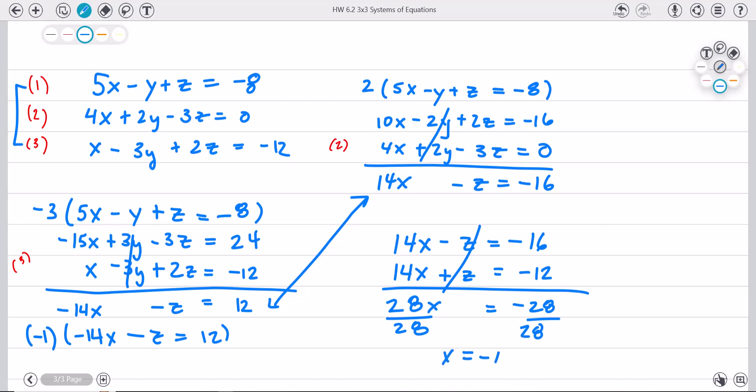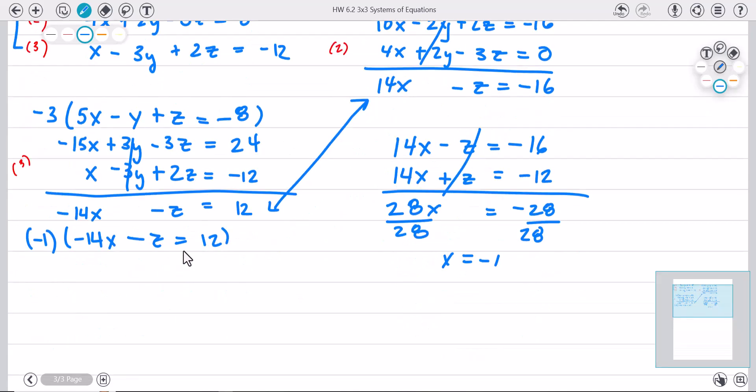Now from here, you just simply start plugging things back in because I have, say, this one right here, fourteen x. Let x equal negative one. Minus z equals negative sixteen. And if you go through all the math algebra steps, you will see you'll get z equals two.